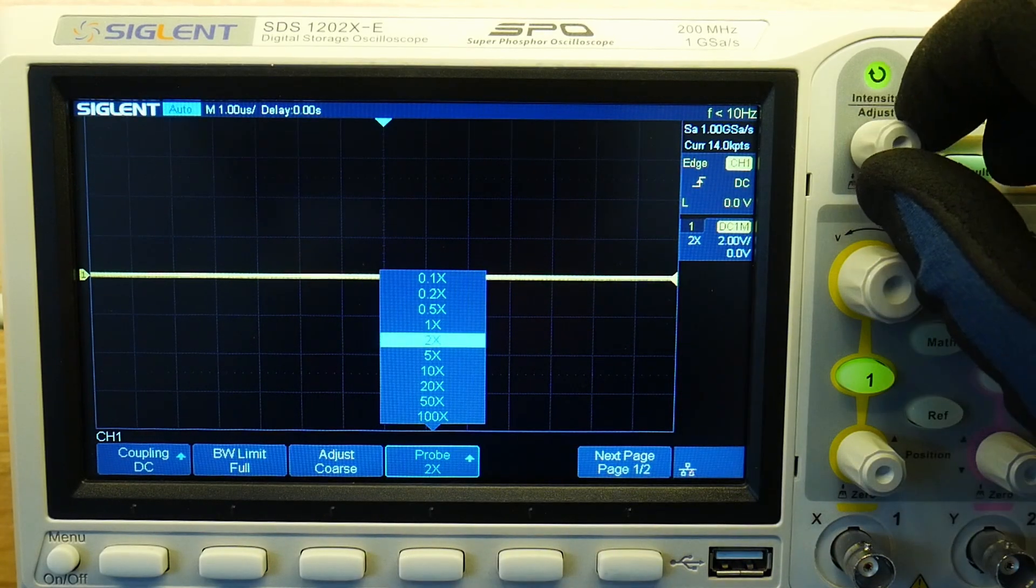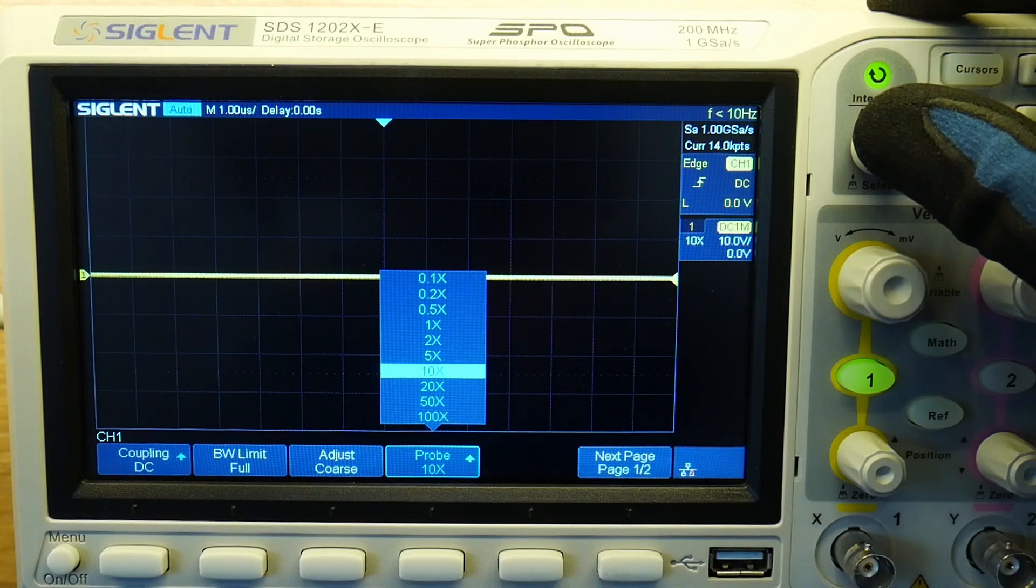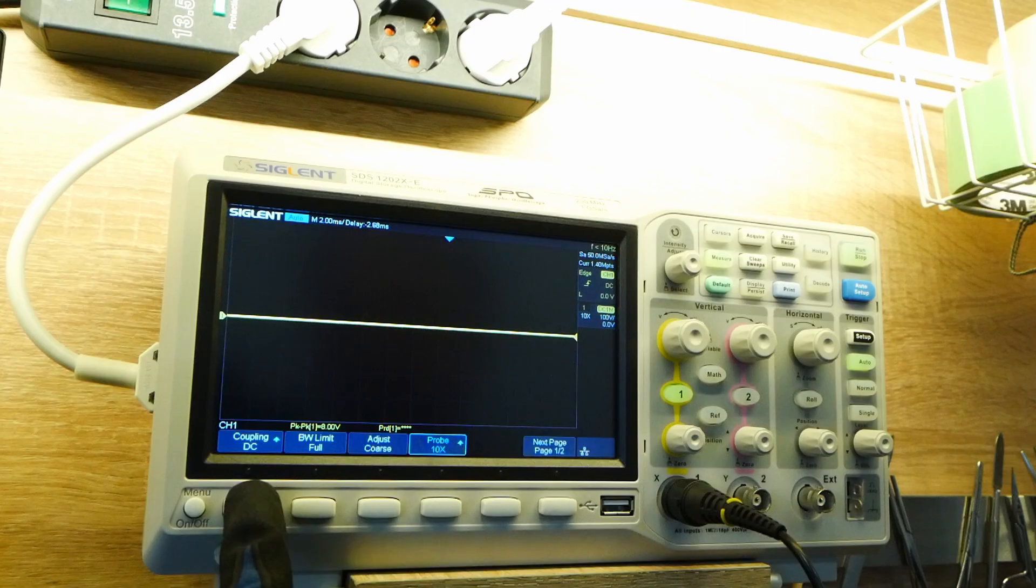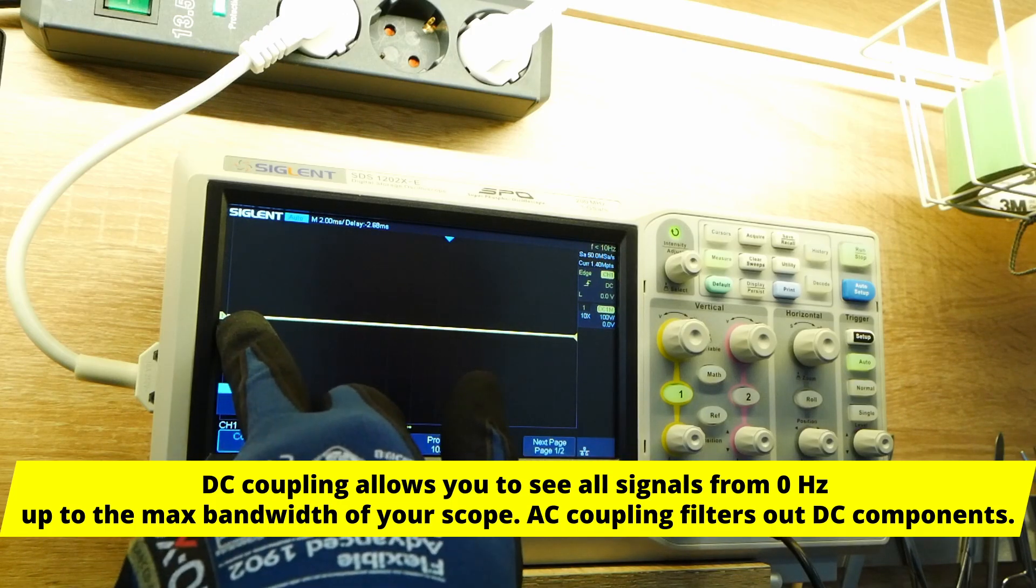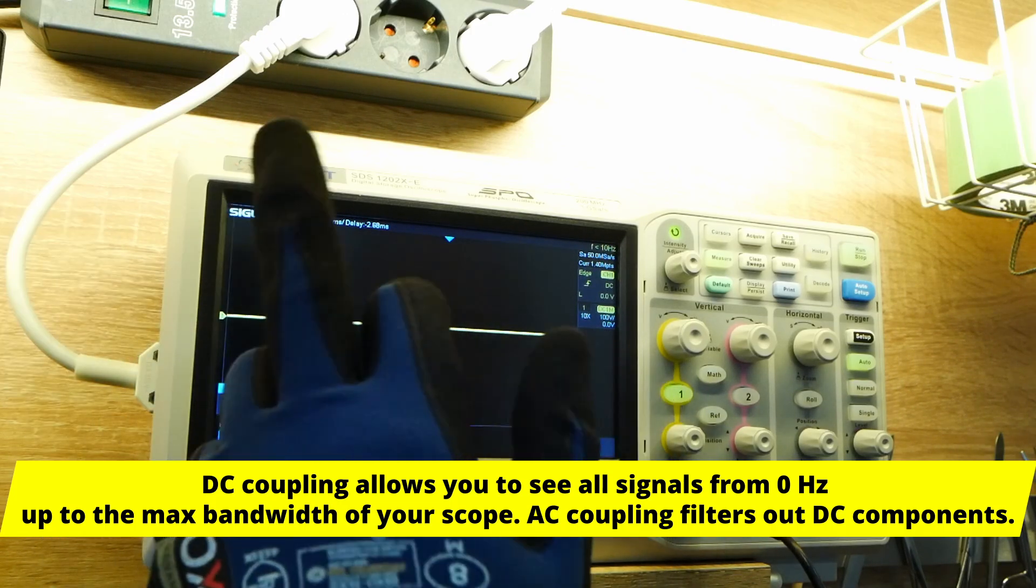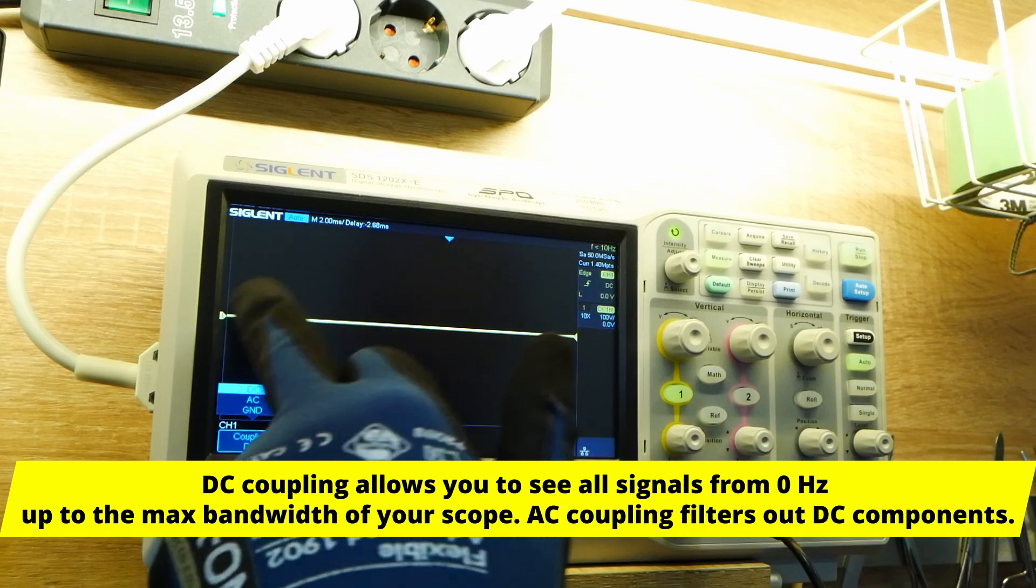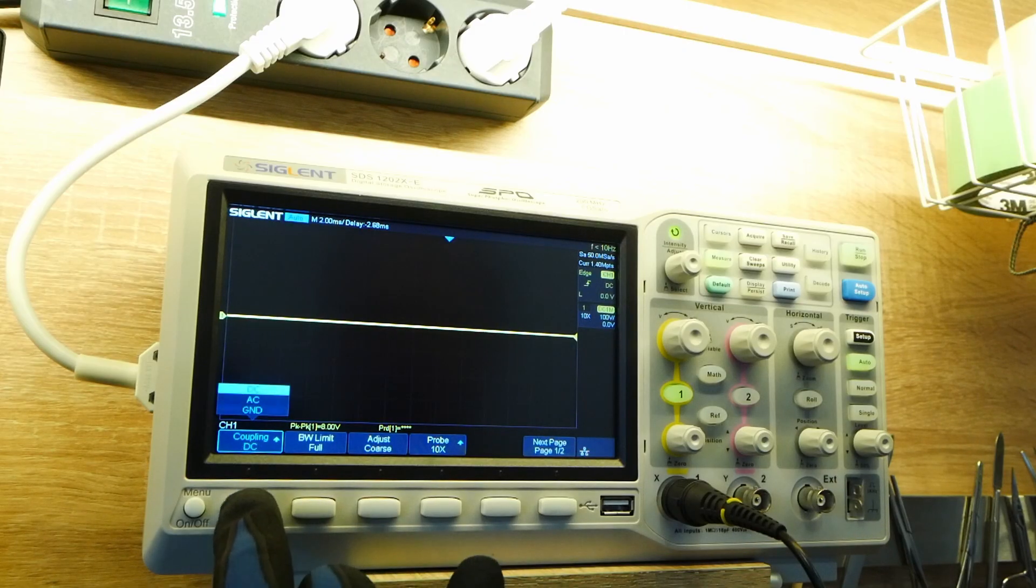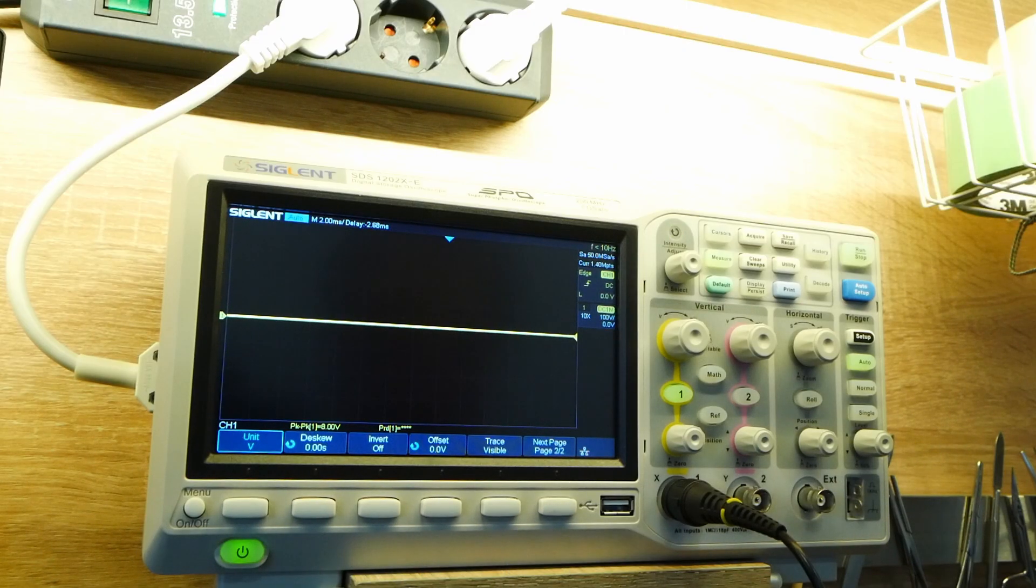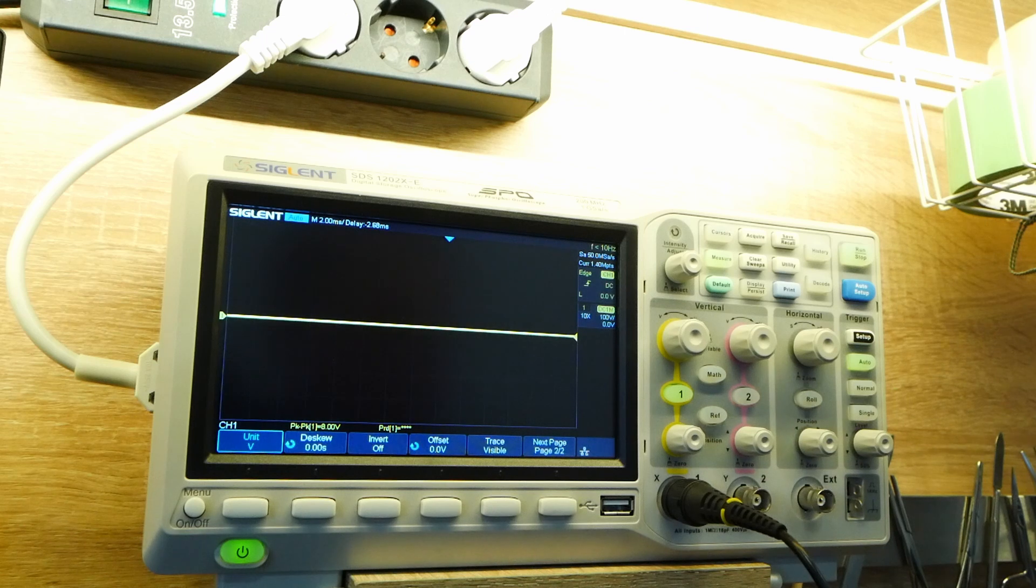Coupling should be DC, not AC. We want to see DC and AC, so coupling DC is fine. And pretty much that's it. So this is our cable.